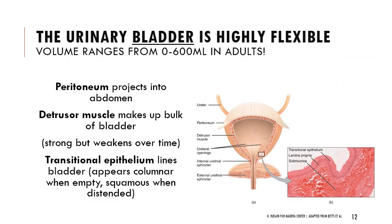The urinary bladder can range from 0 to 600 mL in adults. The peritoneum at the top of the bladder extends into the abdomen. There's a special muscle making up the bulk of the bladder that starts out strong but weakens over time, contributing to incontinence in older adults. A special transitional epithelium lines the bladder — when empty it appears columnar, but when distended and full of urine it stretches out and looks squamous. That property allows it to be highly flexible.